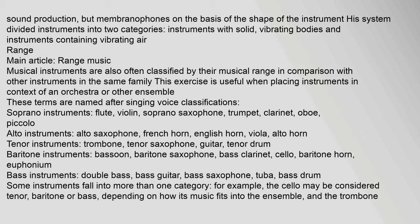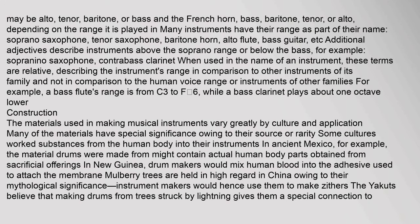Some instruments fall into more than one category. For example, the cello may be considered tenor, baritone, or bass, depending on how its music fits into the ensemble, and the trombone may be alto, tenor, baritone, or bass. Many instruments have their range as part of their name, such as soprano saxophone, tenor saxophone, baritone horn, alto flute, and bass guitar. Additional adjectives describe instruments above the soprano range or below the bass, for example, sopranino saxophone and contrabass clarinet. When used in the name of an instrument, these terms are relative, describing the instrument's range in comparison to other instruments of its family.